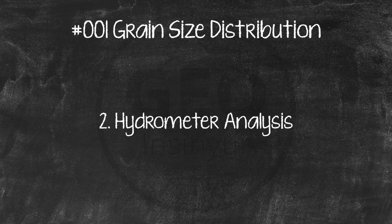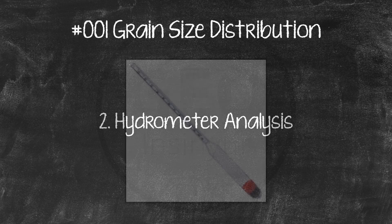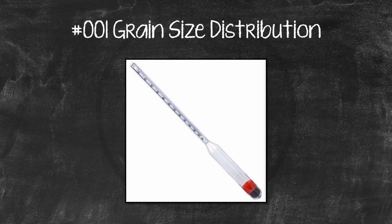Hydrometer Analysis is used to attain the grain size distribution of fine grain soils, silts and clays smaller than 0.075 mm passing number 200 sieve.